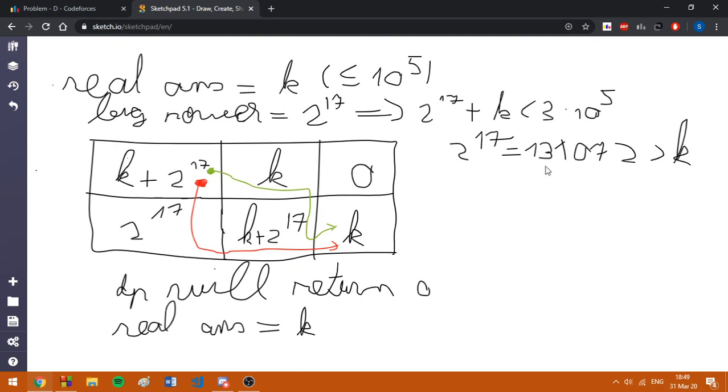2^17 is some 131,000, and it is also bigger than the maximum value of k. Why does this help us? This helps us because we won't have overlappings in the bitwise AND, and also in the additions.